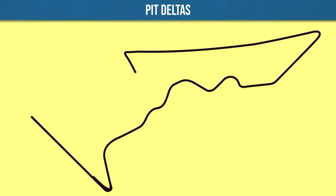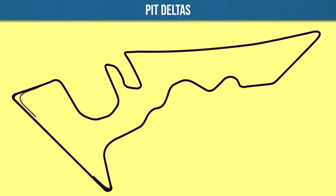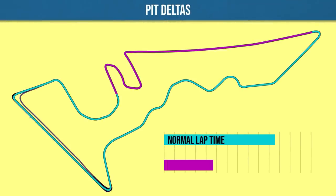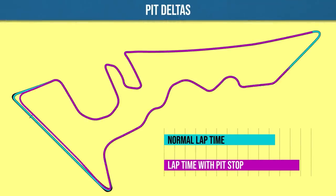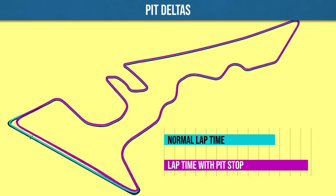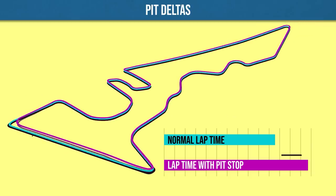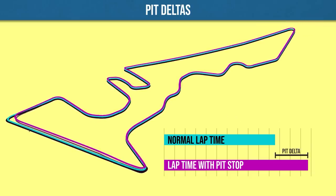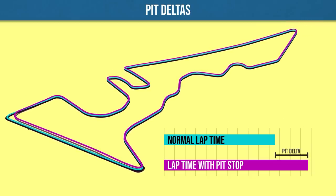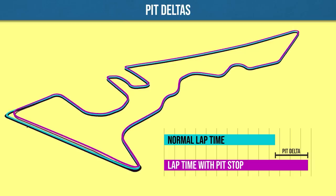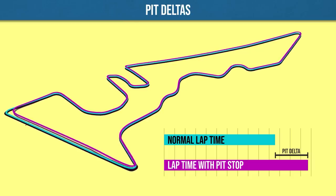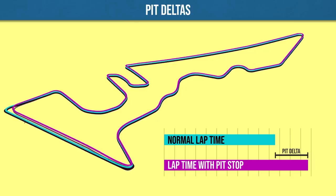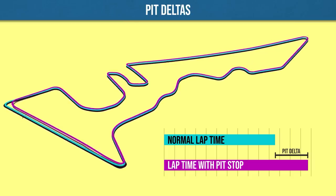So on to pit deltas themselves. When we go to a circuit, teams will work out the difference in lap time between running a normal lap at race speed and running a lap in which you have to take a pit stop. The time difference between the normal lap and the pit stop lap is the pit delta — basically it tells you how much time you're going to lose in taking a pit stop compared to someone who doesn't pit that lap.